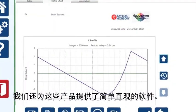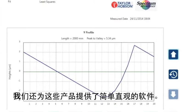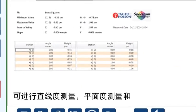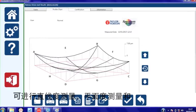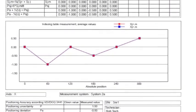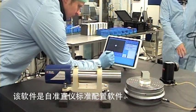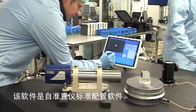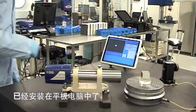We also offer simple intuitive software for these products that will give you information on straightness measurement, flatness measurement, and polygon measurement. This software is provided as standard with the ultra autocollimator already loaded on the tablet PC.